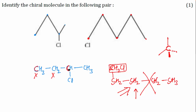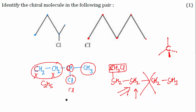Now what about the first compound? This carbon and that carbon are of course not chiral. But looking at this particular carbon, the four groups attached are: C2H5, Cl, H, and CH3. All four groups are different, which means this is a chiral carbon. So in this compound you have one chiral carbon, and if you have one chiral carbon in a compound, that compound will definitely be a chiral molecule.